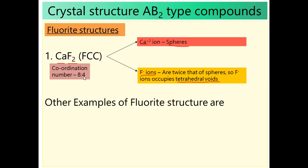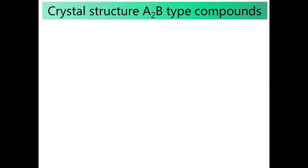Other examples of fluoride structures are SrF2, BaF2, PbF2, and BaCl2. A2B structure is also known as anti-fluoride. Anti-fluoride follows the normal pattern; fluoride structure follows the inverse pattern. In the fluoride structure, cation occupies sphere position and anion occupies void position.